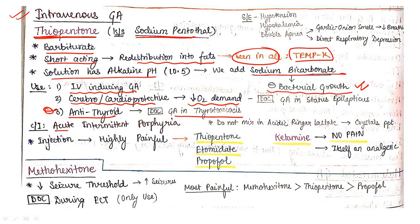Contraindications: contraindicated in acute intermittent porphyria because all barbiturates are contraindicated. Injection is highly painful - this painful injection is seen in others also. Only ketamine has no pain because ketamine is itself an analgesic.